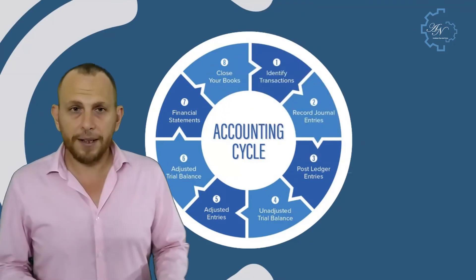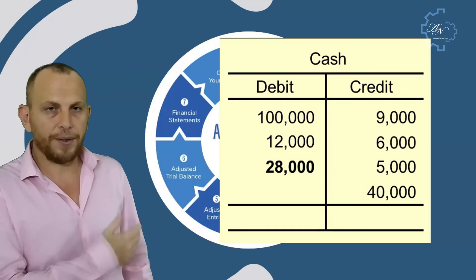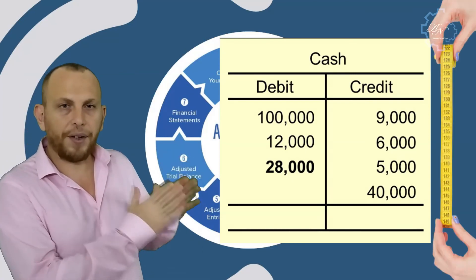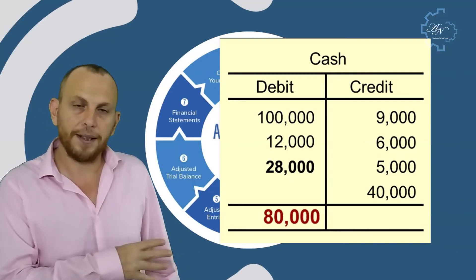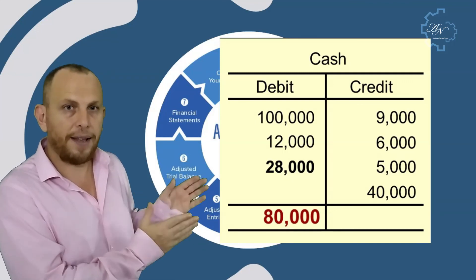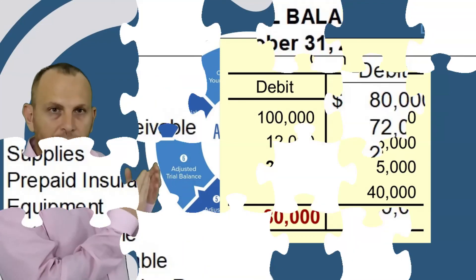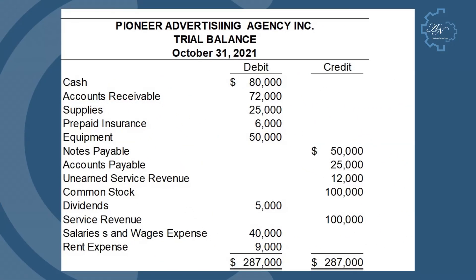Now we'll prepare the trial balance. Before that, we need to know the balances of all accounts. For example, for the cash account, we sum the debit side and the credit side, and the residual is the balance. The cash balance is $80,000. We can see it in the unadjusted trial balance, which includes cash, accounts receivable, supplies, prepaid expenses, and so on. After listing all accounts and their balances, we sum the debits and credits — they must be equal. That's all for today; see you in the next video.